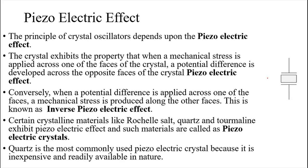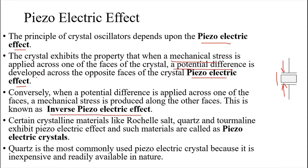Crystal oscillators are based on a concept called the piezoelectric effect. Consider this crystal structure — there are two effects: the piezoelectric effect and the inverse piezoelectric effect. In the piezoelectric effect, we apply mechanical stress on both ends of the crystal, and we get electrical vibrations — a potential difference — across the crystal as output.